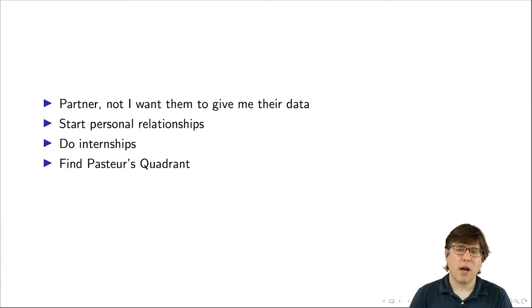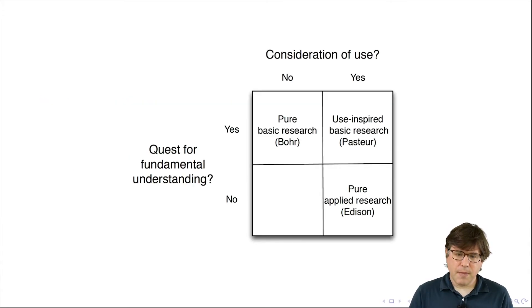And the fourth idea for how to build a good partnership is to find Pasteur's quadrant. And so let me explain what I mean by that. This is a schematic that illustrates Pasteur's quadrant. Taking a step back, it's the case that some academics seem to think that there is applied research, which is motivated by use, and this is kind of grimy and not the kind of thing we do.